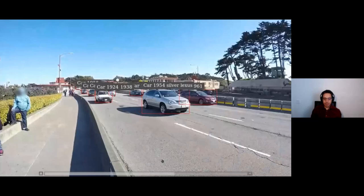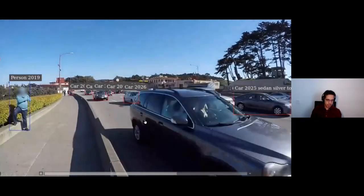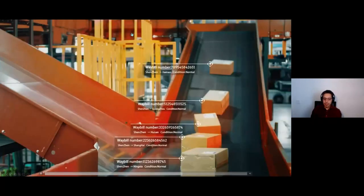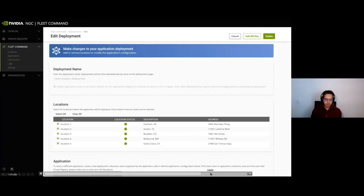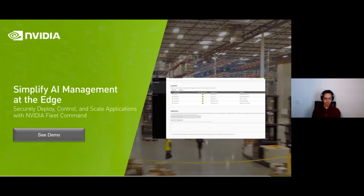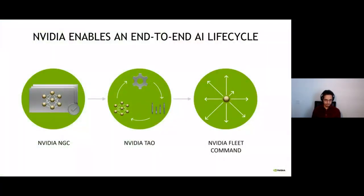Here is an example of how this works in real life: a DeepStream pipeline working on 30 devices. So to summarize what we've covered: NVIDIA NGC for registries, containers, models, and Helm charts; NVIDIA TAO Toolkit for training; DeepStream for building efficient pipelines; and NVIDIA Fleet Command for deployment and managing your deployments.